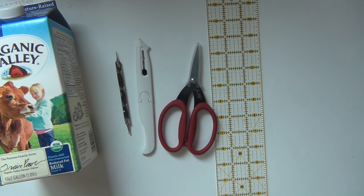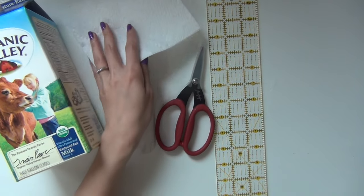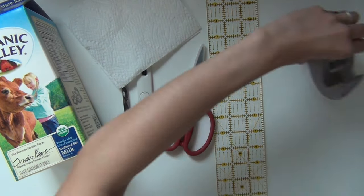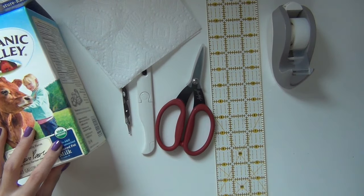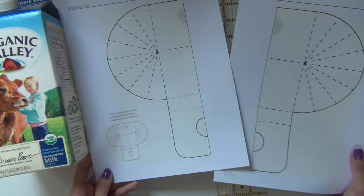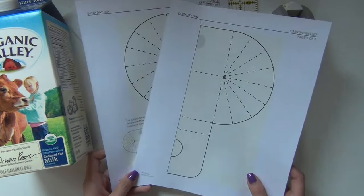Ruler, very important to keep our lines straight. I have a piece of paper towel here to clean up the inside of our milk carton, some tape and most importantly our pattern.